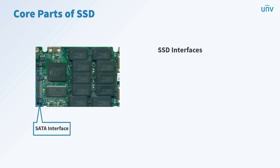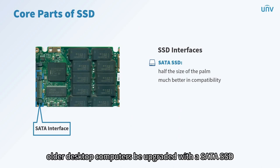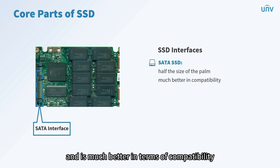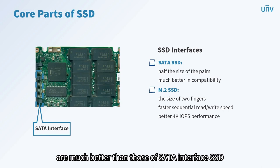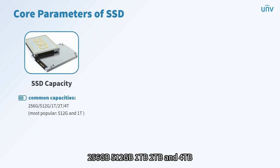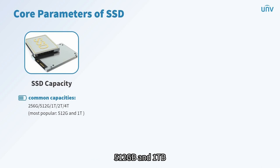Regarding SSD interfaces: SATA SSD is about half the size of a palm and was widely used in previous years. It is recommended for upgrading older desktop computers as it uses the same interface as HDD and offers good compatibility. M.2 SSD is about the size of two fingers and is the most widely used currently, with much better sequential read/write speed and 4K IOPS performance than SATA interface SSD. Common SSD capacities are 256 GB, 512 GB, 1 TB, 2 TB, and 4 TB. The most popular capacities in the market are 512 GB and 1 TB. The choice depends on specific use and budget.